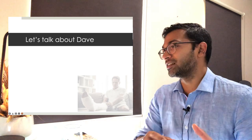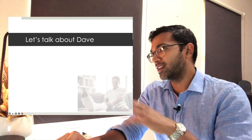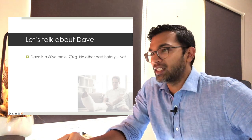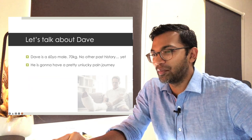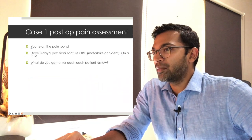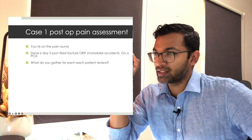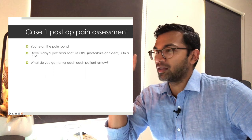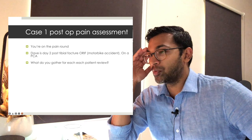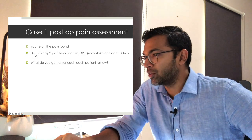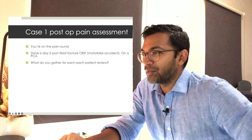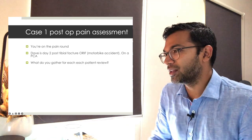Now for the practical crux — Dave is a 60-year-old, 70 kg male with no past history, going to have a pretty unlucky pain journey. He's had a tibial fracture with open reduction internal fixation from a motorbike accident, now day two post-op on a PCA. When you do a post-op pain assessment on the pain round, you gather a severity score and assess function.